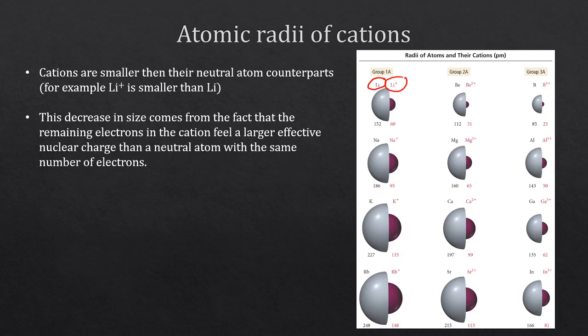In addition to removing electrons without changing the proton count, the decrease in size can also be described by the fact that the remaining electrons in the cation feel a larger effective nuclear charge than a neutral atom with the same number of electrons. For example, lithium plus and helium both have two electrons, but lithium has three protons whereas helium only has two. That means lithium plus is going to be smaller than helium even though they both have two electrons.